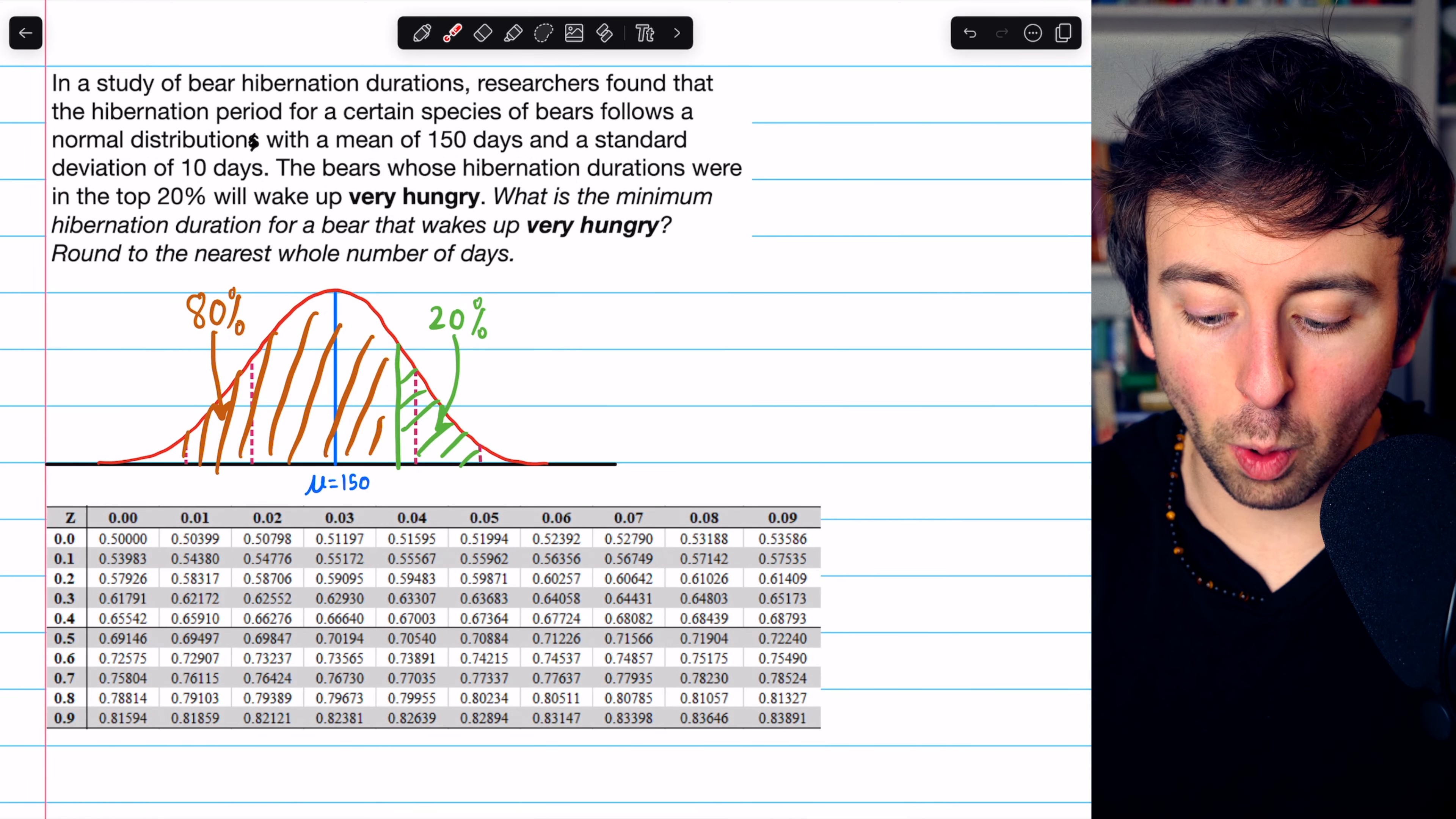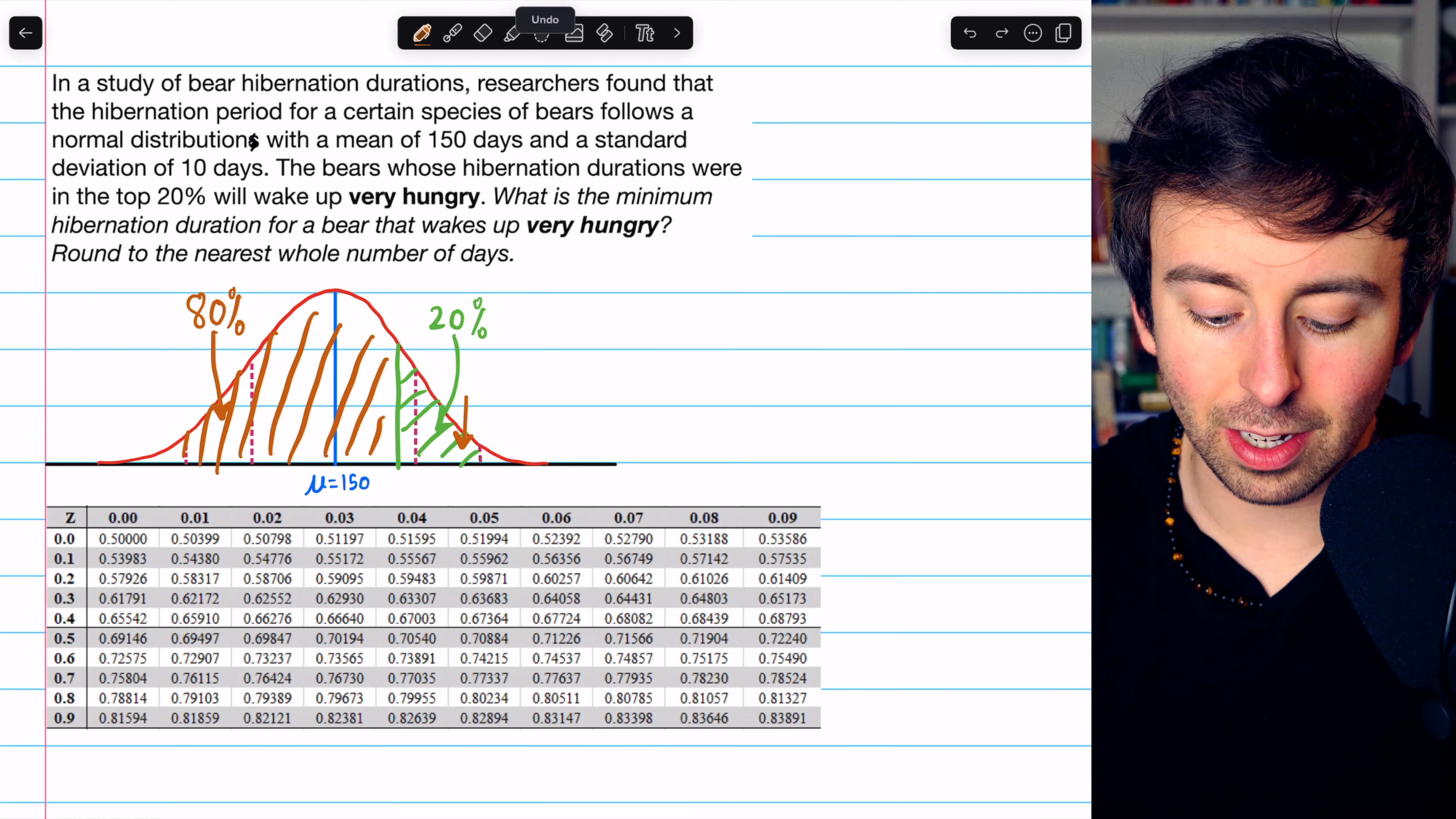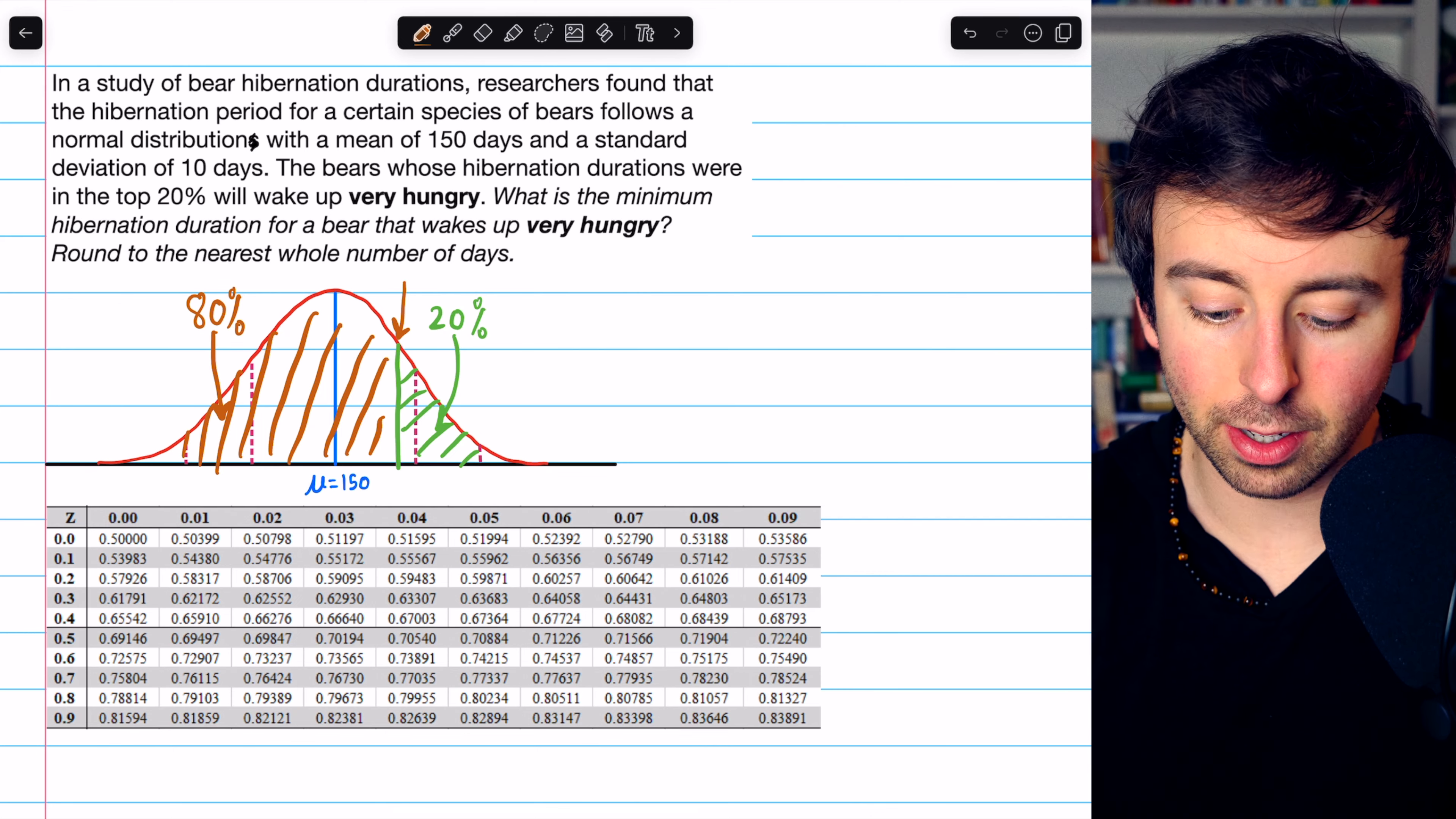A bear right over here would definitely be in the top 20%, but that wouldn't be the minimum hibernation duration to be in the top 20%. The minimum would be right here, separating 20% from 80%.